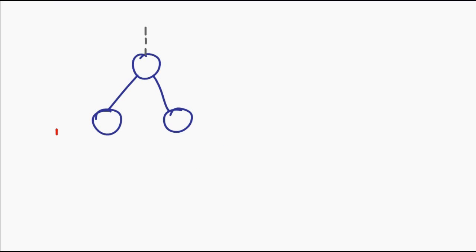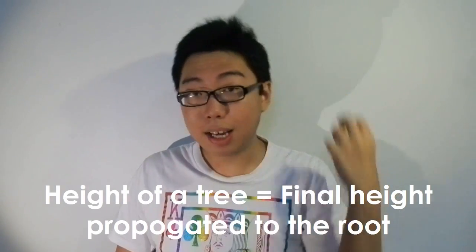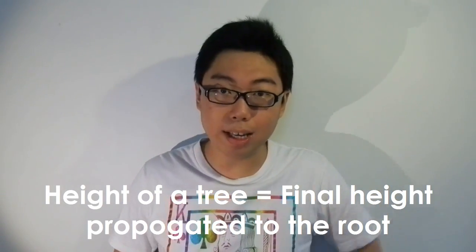The more eagle-eyed among you would have noticed that I started the calculation from zero. Does that mean that an empty tree has a height of negative one? Well, yes. While this might seem a little counterintuitive, that is in fact the convention. The height of a tree is propagated from the bottom to the top, and when we finish doing this, we look at the root and decide this is how tall the tree is. That is precisely the information that the AVL tree algorithm needs to decide whether or not a tree is balanced.